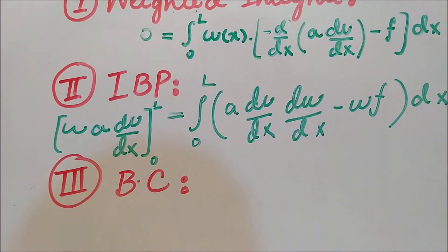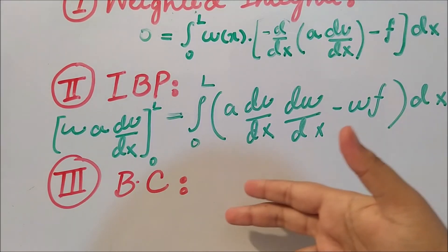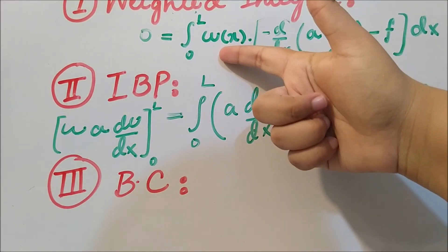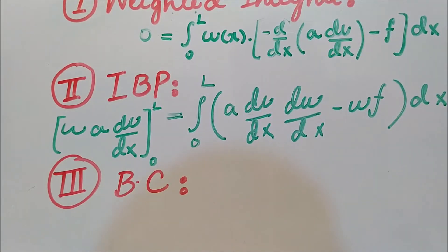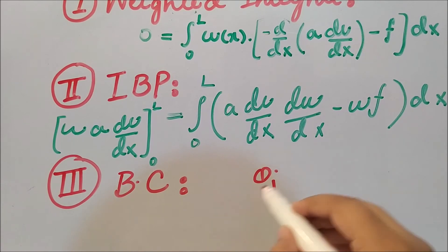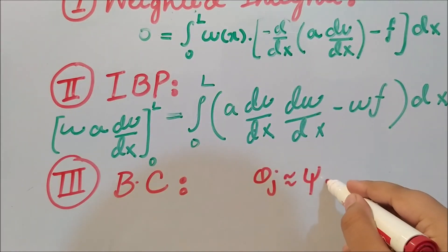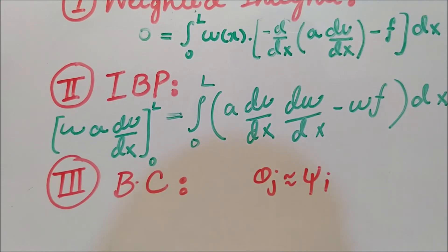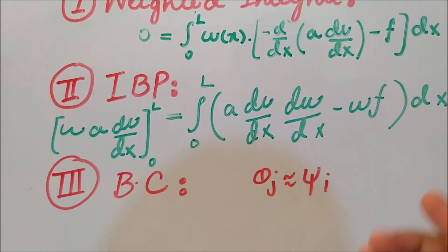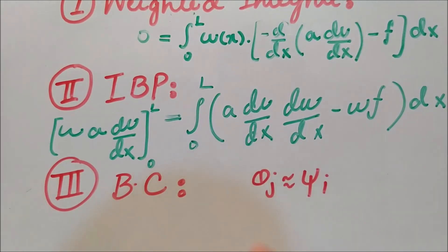The third step is applying the boundary conditions. In this step we assume that the weight functions are the same as the shape functions — the shape functions are φ_j — so we assume φ_j equals the weight functions. This is the main assumption in the weak development of the finite element method, also known as the Galerkin approach.